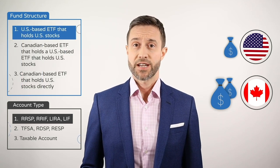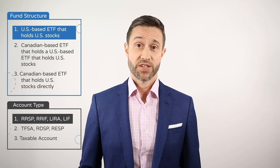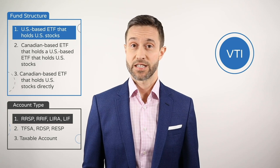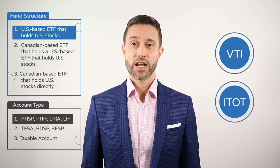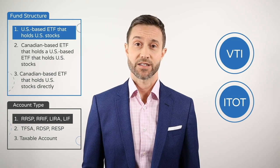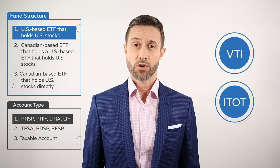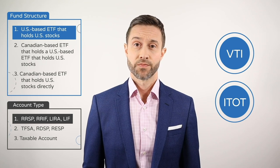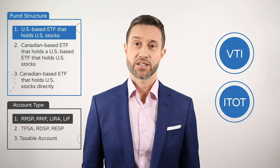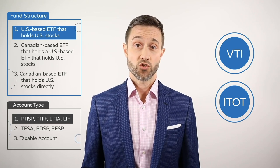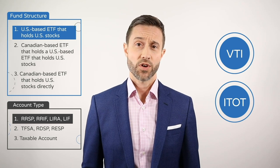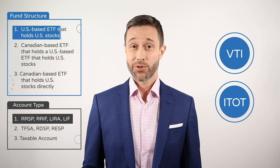Popular examples of US equity ETFs with this tax-efficient structure include the Vanguard Total Stock Market ETF with ticker symbol VTI, and the iShares Core S&P Total US Stock Market ETF with ticker symbol ITOT. Both funds have lower expense ratios than their Canadian-based counterparts, and based on the current US equity dividend yield of 1.9%, opting for a US-based US equity ETF in your RRSP should save you around 0.3% per year.